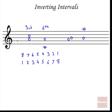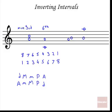The qualities also follow a pattern: a major interval inverted becomes minor, and minor becomes major. Perfect intervals always stay perfect. An augmented interval becomes diminished when inverted, and diminished becomes augmented. For example, an A to C minor third becomes a major sixth when inverted, because C to A in a C major context gives a major sixth.